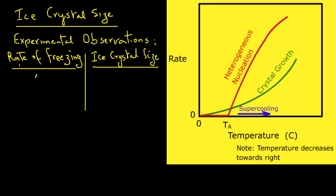Through experimental observations we can determine that numerous ice crystals are obtained when we have a high rate of freezing, whereas a slow rate of freezing results in a few large ice crystals. Let's see if we can deduce this from this figure.